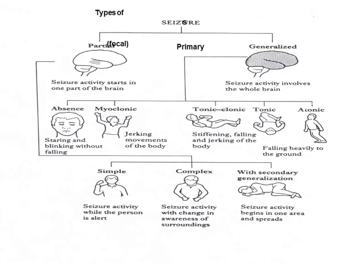Then we have simple seizures — seizure activity while the person is alert, involving jerking of only one part of the body. Complex seizures involve a change in awareness of surroundings. And with secondary generalization, seizure activity begins in one area and then spreads.